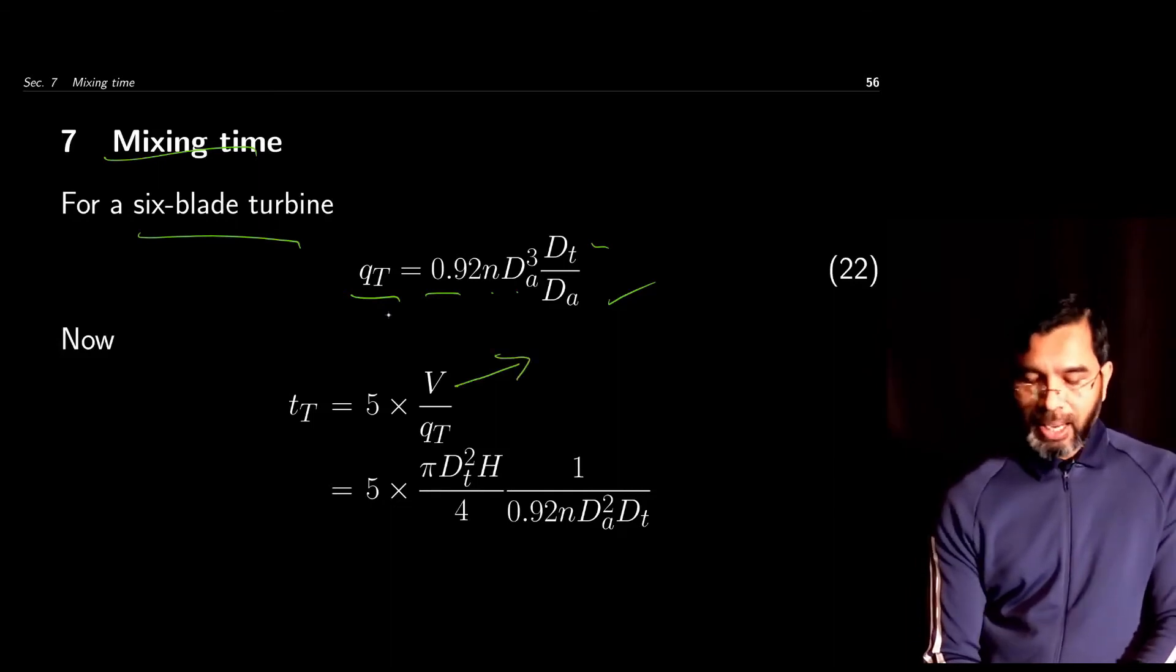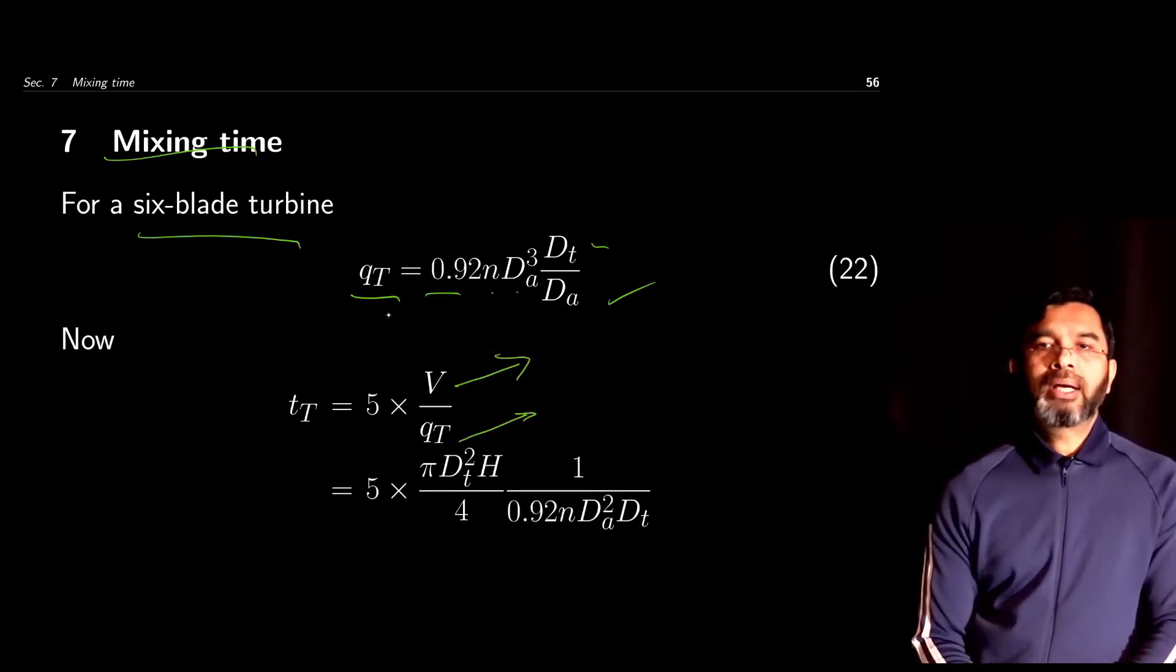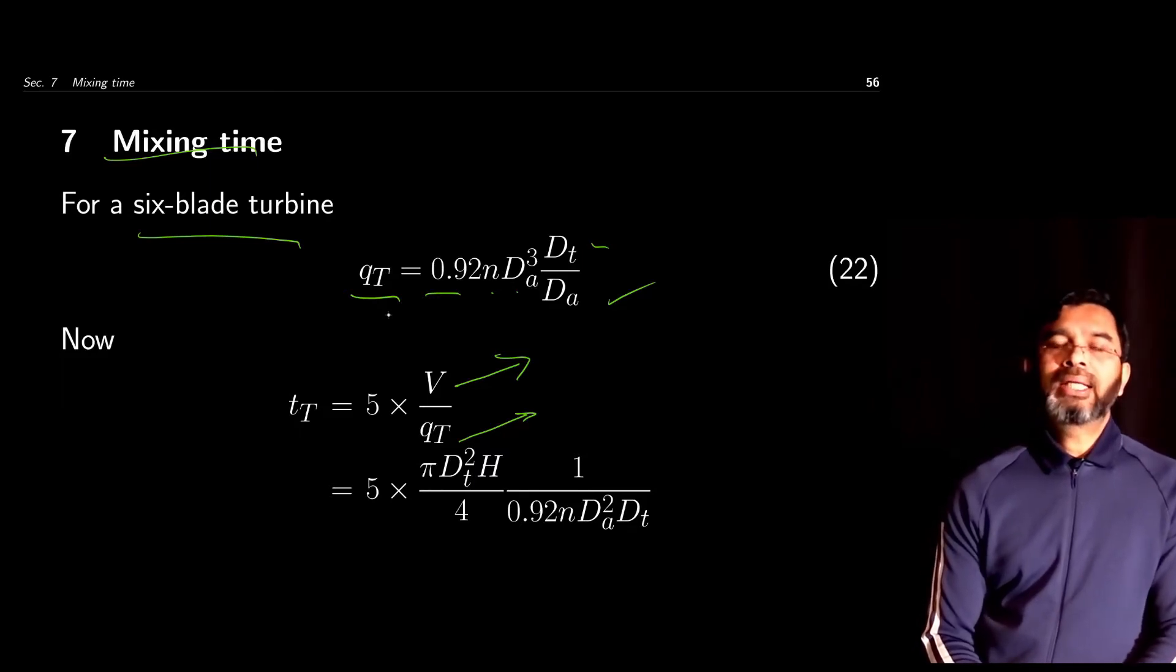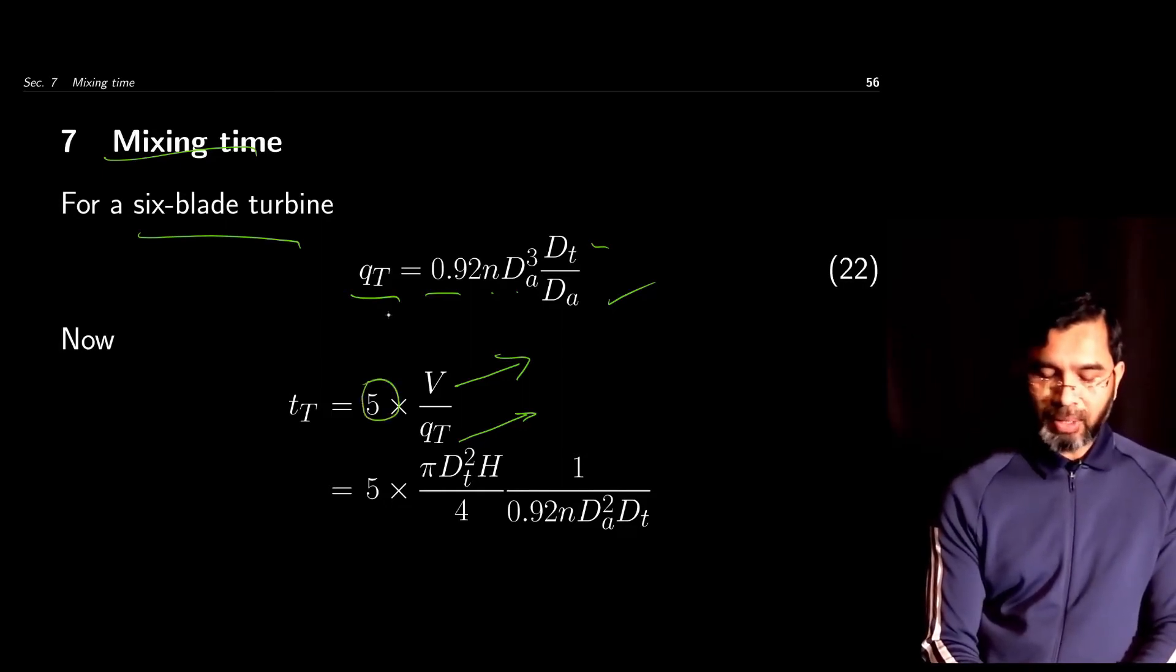V over qt will indicate the time required for the fluid to go through the impeller one time, and we multiply by five so that will give the mixing time. The volume of the liquid is given by π/4 dt²h.